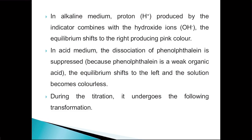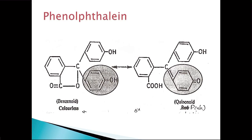In acidic medium, the dissociation of phenolphthalein is suppressed because phenolphthalein is a weak organic acid, so the equilibrium shifts to the left and the solution becomes colorless. This can be shown with a structural diagram — you can see the structure of phenolphthalein with the benzenoid structure, which is colorless, and the quinonoid structure, which is pink.